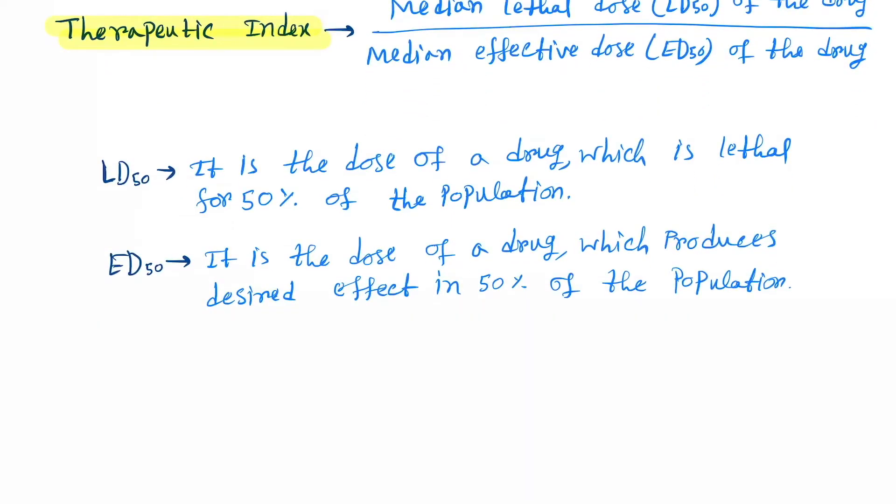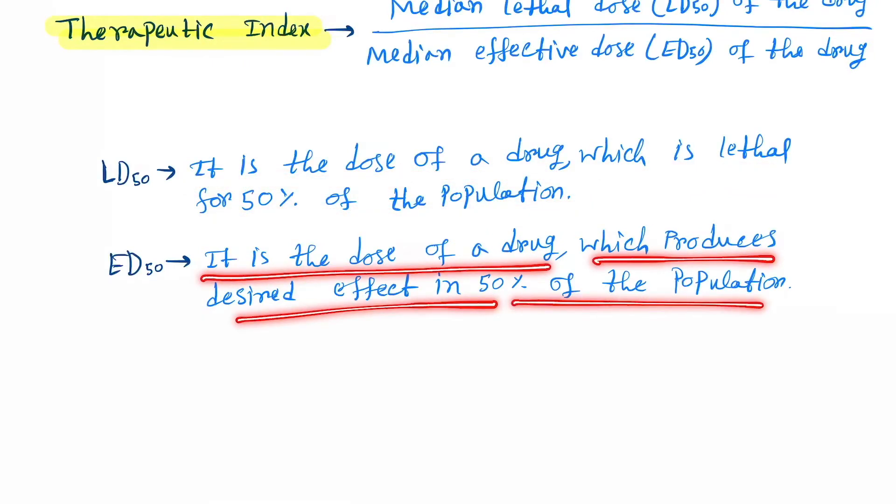LD50 is the dose of a drug which is lethal for 50% of the population. ED50 is the dose of a drug which produces the desired effect in 50% of the population.